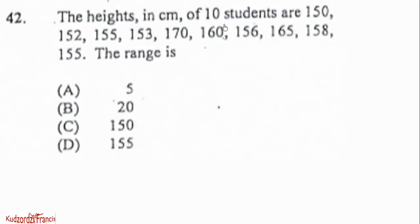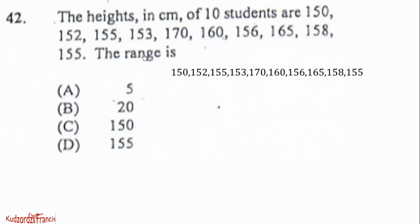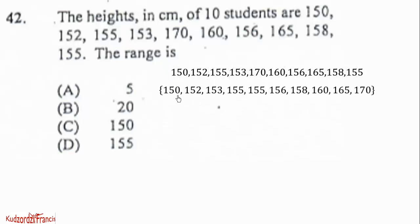Item 42: The heights in centimeters of 10 students are given starting at 150. We want to find the range. Before calculating the range, we need the least and highest values, since the range is the difference between them. By rearranging, the highest is 170 and the least is 150, so the range is 170 minus 150, which equals 20.